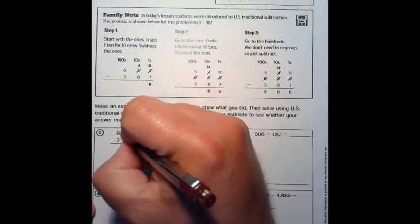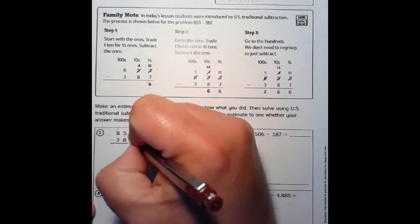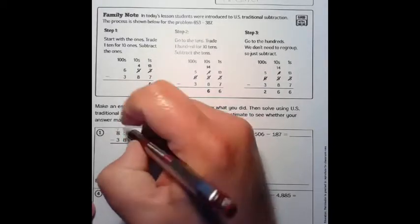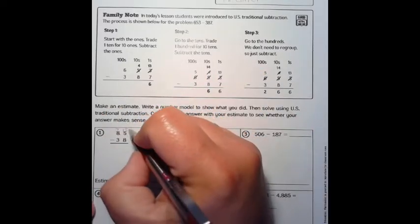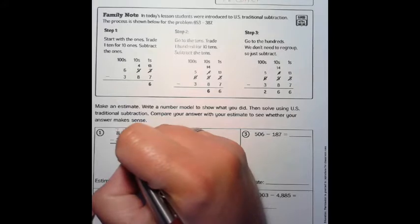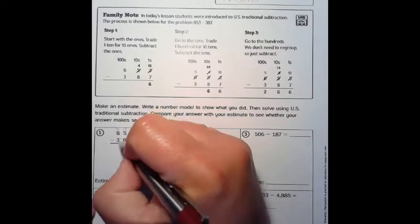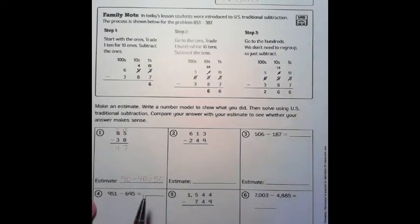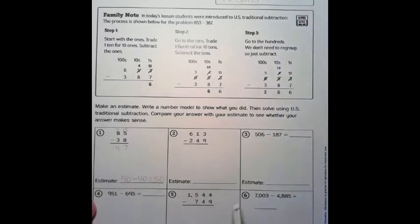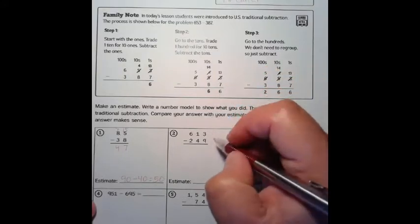We're going to trade in that one for ten ones and add those ten ones to the five we already have, making it 15. Now 15 take away 8 is 7, and 7 take away 3 is 4. 47 is our answer, and that makes sense because our estimate is 50.